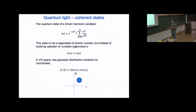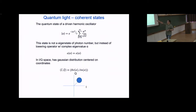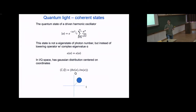In IQ space, the magnitude of α gives the length of the vector. I can express the center in I and Q space — I-bar and Q-bar — as the real and imaginary components of this complex coefficient α. So α is really describing where it is in phase space, and the coherent state has a Gaussian distribution in IQ space.